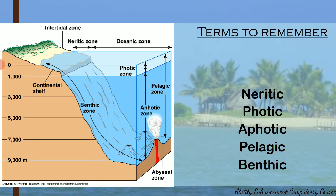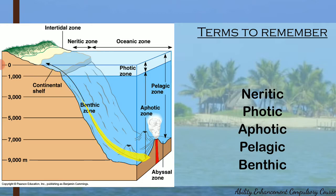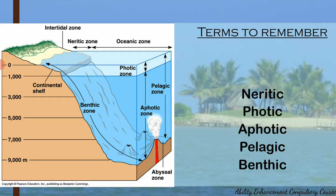The pelagic zone is the open ocean. The benthic zone refers to the sediments at the seafloor, where certain organisms live. These terminologies reflect zonation based on depth and light: the neritic zone corresponds to the continental shelf (the area between the shoreline and the shelf break), the photic zone receives ample light, the aphotic zone receives negligible light, the pelagic zone is the open ocean, and the benthic zone is the seafloor.